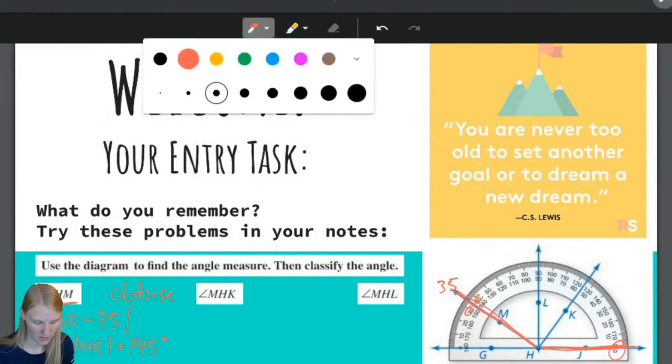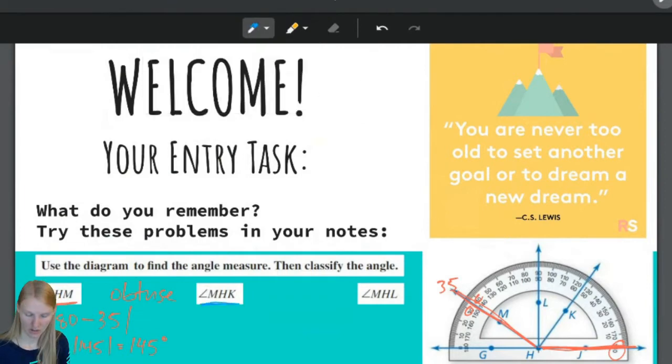Okay. New color. MHK. All right, so now we're still at M, but now we're going up here to K. We already know that it's 35 over here. So absolute value of 35 minus, over here, we're right in between 120 and 130. So this is 125. Absolute value of 35 minus 125 is negative 90.